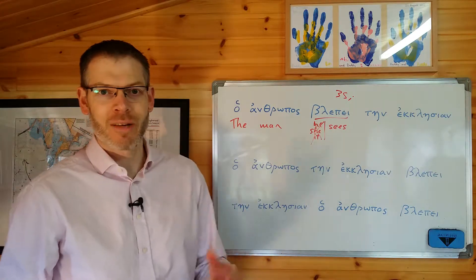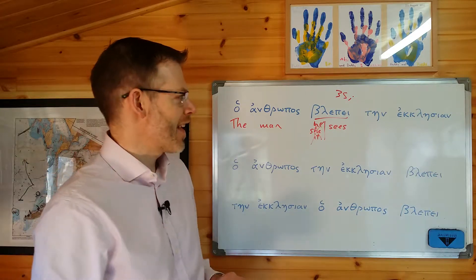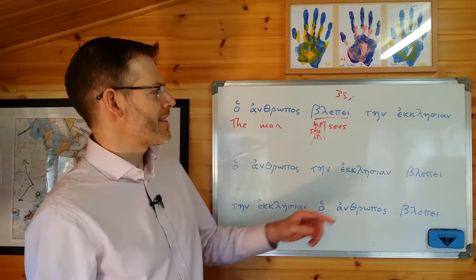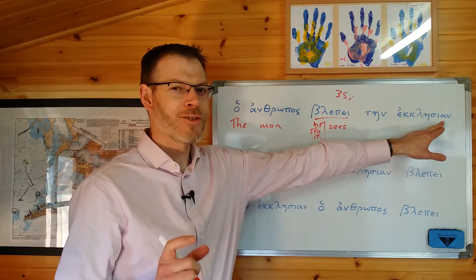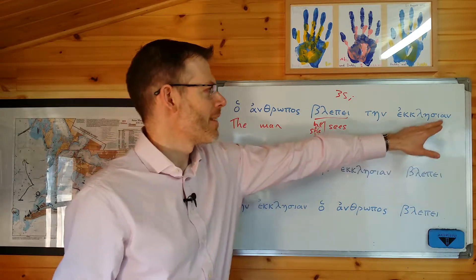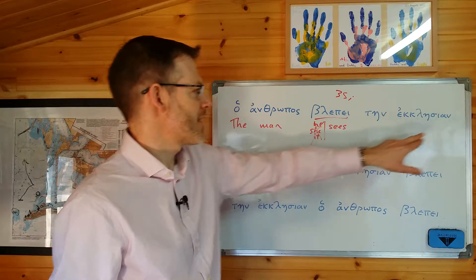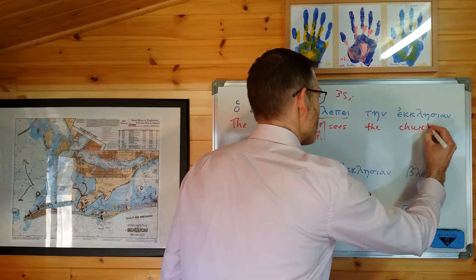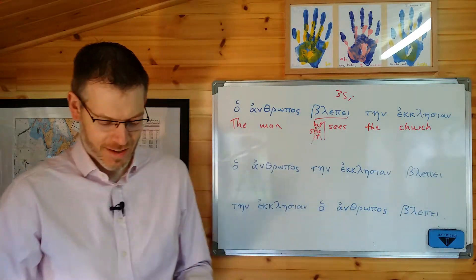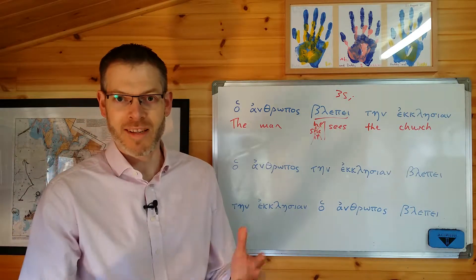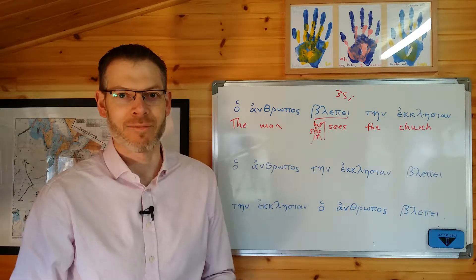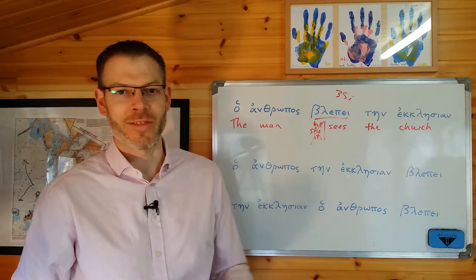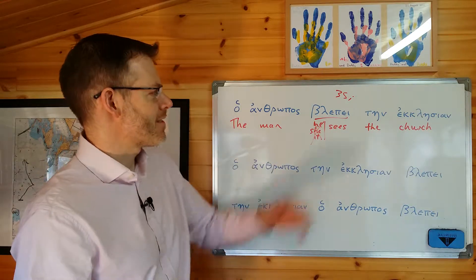And then is there anything else — verb, subject, object? Yes, there is. You've got a noun in the accusative: tēn ekklēsian. This is one of those slightly different feminine nouns where the ending has an alpha in it, but it's accusative, so it goes with the accusative article. So the translation is: the man sees the church. And of course, church in this context doesn't mean the church building — it means the assembly of people. Ekklēsia comes from the word meaning 'assembly,' and that's how it's used in Old Testament translations of the Hebrew text into Greek.